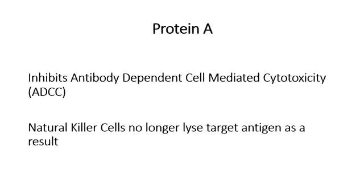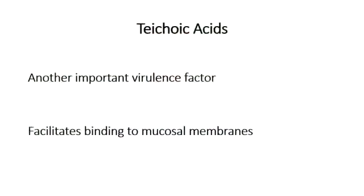However, Staphylococcus aureus has developed a smart way of evading this antibody-dependent cell-mediated cytotoxicity. It uses Protein A to confuse the Fc portion of IgG, so that natural killer cells cannot be activated by the antibodies coating the antigen. Additionally, teichoic acids are proteins that allow the bacteria to bind more easily to mucosal membranes, which is important for the many infections involving mucosal membranes caused by Staphylococcus aureus.